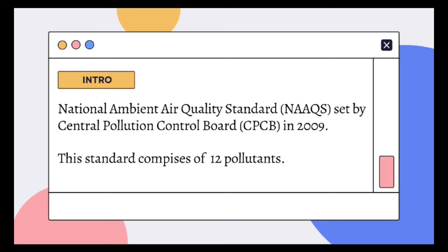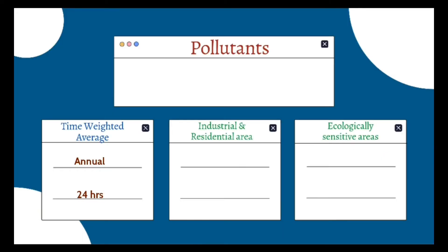In this standard we are monitoring 12 pollutants all over India. Whenever you are studying about this standard, they have mentioned what the pollutant is, in which measurement unit it should be measured, and what is the time-weighted average — whether we are monitoring annually, 24 hours, 8 hours, or 1 hour. The monitoring area is classified under two categories: industrial or residential area, or ecologically sensitive area as mentioned by the central government.